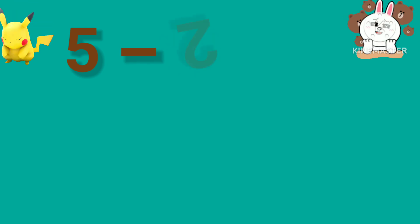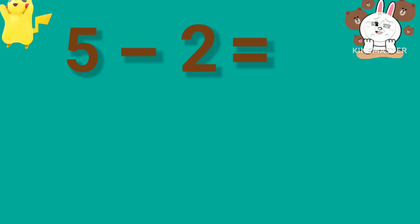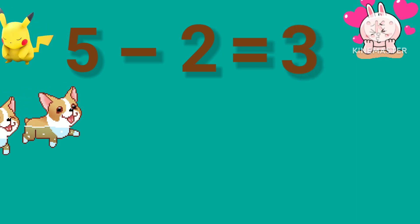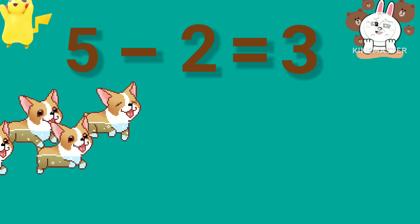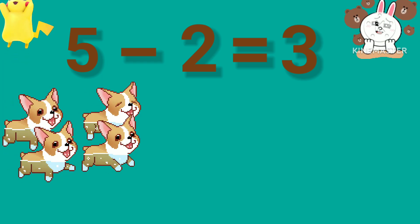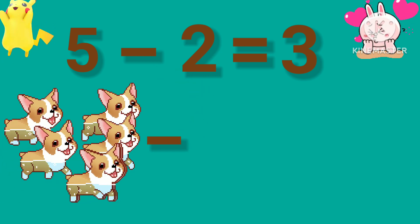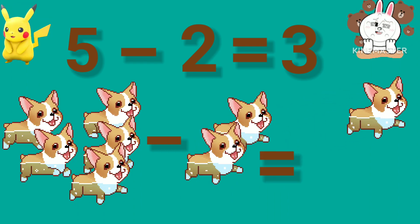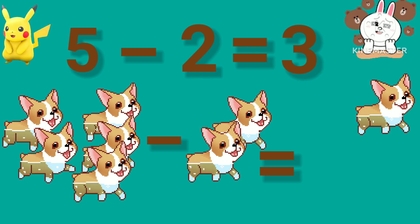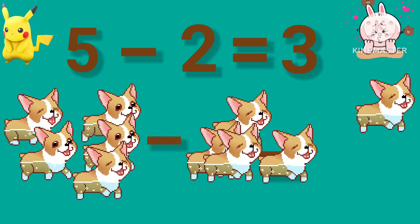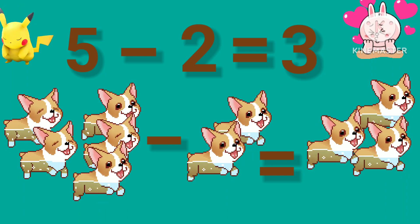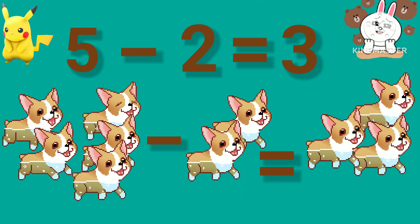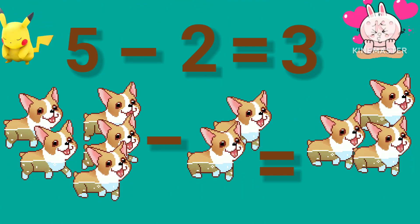5 minus 2 is equal to 3. We have 5 puppies minus 2 puppies, which is equal to 3 puppies. So 5 minus 2 equals 3.